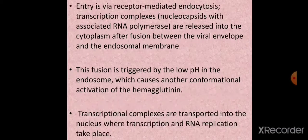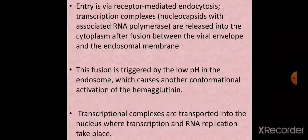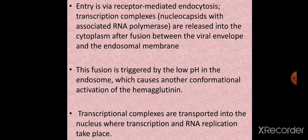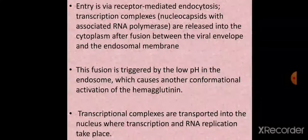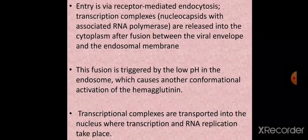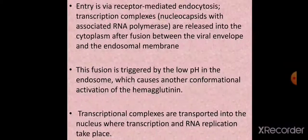The nucleocapsid with RNA polymerase is released into the cytoplasm after fusion between the viral envelope and the endosomal membrane. This fusion is triggered by the low pH in the endosomes, which facilitates the conformational change in hemagglutinin and leads to fusion of the viral membrane with the endosomal membrane. The released transcriptional complexes are then transported into the nucleus, where RNA transcription and replication take place.